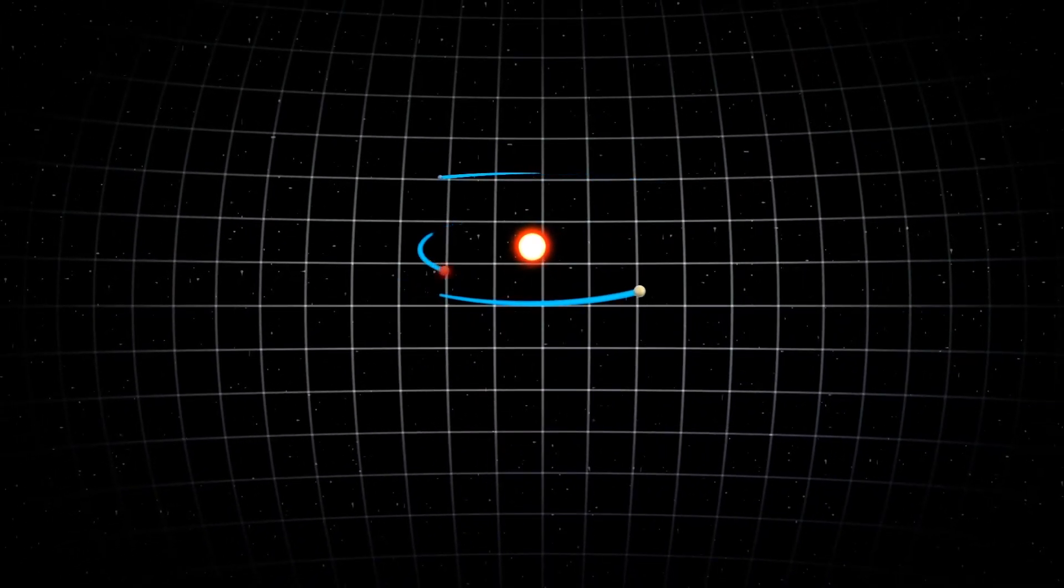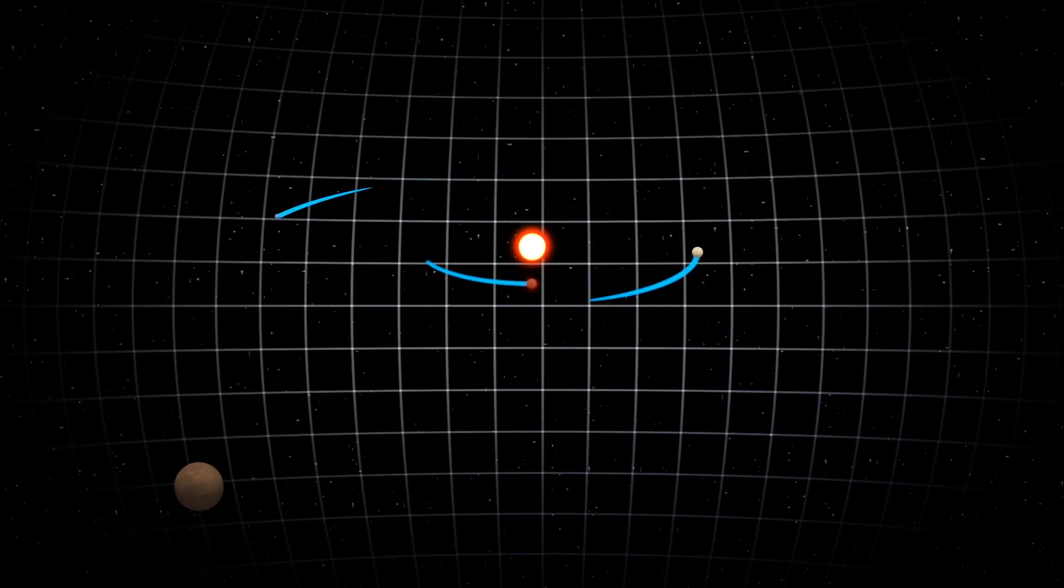The closest to the star, TOI-700b, is Earth-sized, rocky, and has an orbit of 10 days.